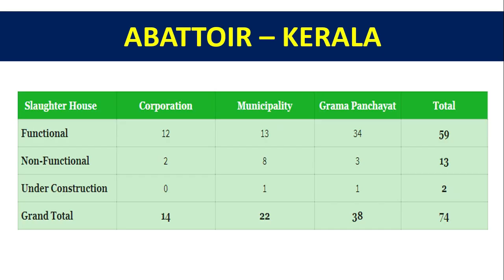Abattoirs in Kerala: under the Slaughterhouse Corporation, municipalities, and gram panchayats — functional abattoirs total 12 under corporation, 13 under municipality, and 34 under gram panchayat, giving a total of 59, with a grand total of 74.